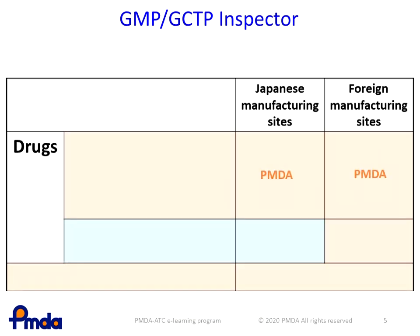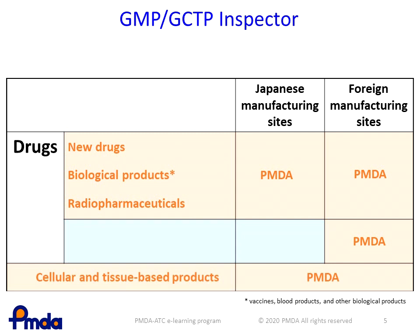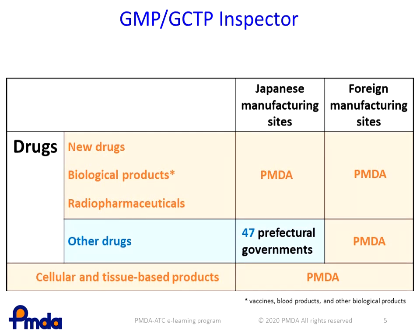PMDA is responsible for all foreign manufacturing sites and Japanese manufacturing sites of new drugs, biological products, radiopharmaceuticals, and cellular and tissue-based products. On the other hand, the 47 prefectural governments are responsible for Japanese manufacturing sites of generic drugs, OTC drugs, or quasi-drugs such as insecticides. However, for-cause inspections — including special inspections and standard inspections — may be conducted by joint teams of PMDA, MHLW, and the 47 prefectural governments in some cases.